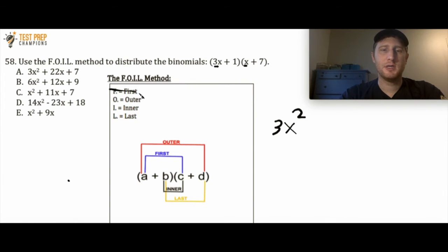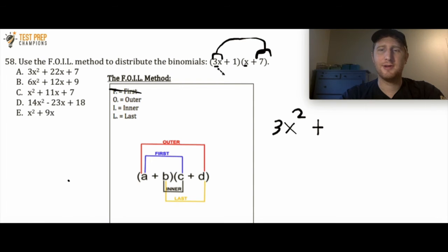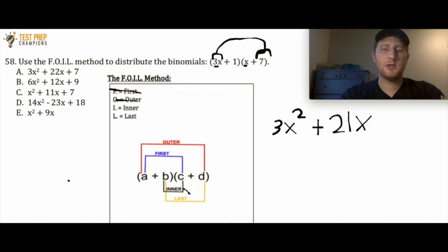The O stands for Outer. My first term is 3x, and I go to the outermost term in the second set of parentheses, which is 7. So 3x times 7 — 3 times 7 is 21, and we pull the x along for the ride. So the outer is 21x. Now the I stands for Inner — that's 1 times x, which is just x.